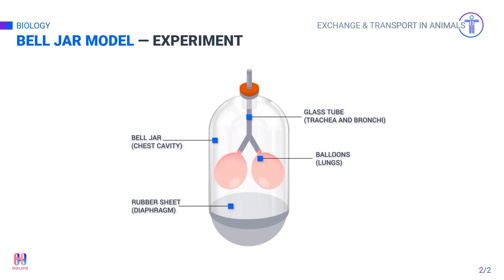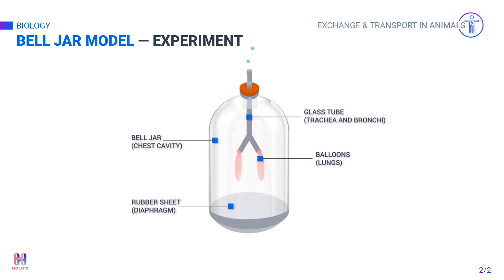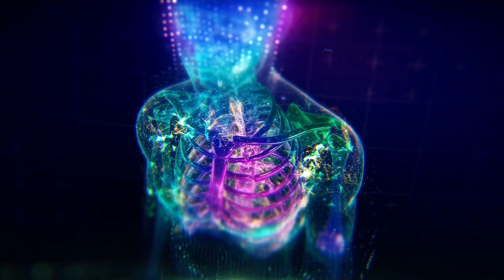When the rubber sheet is moved back to its original position, the pressure increases and the volume decreases, moving the air out — this represents exhalation. Visit hollowtrial.com to find out more about our courses.